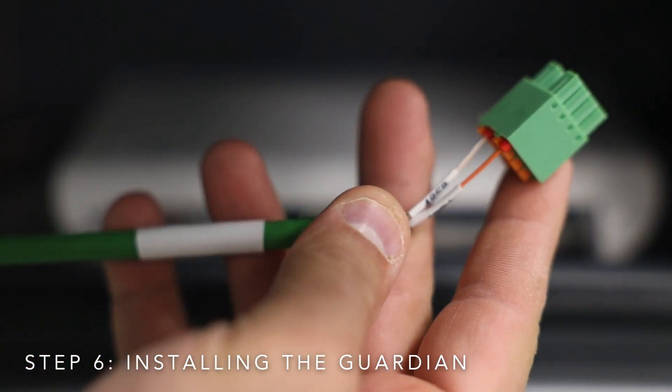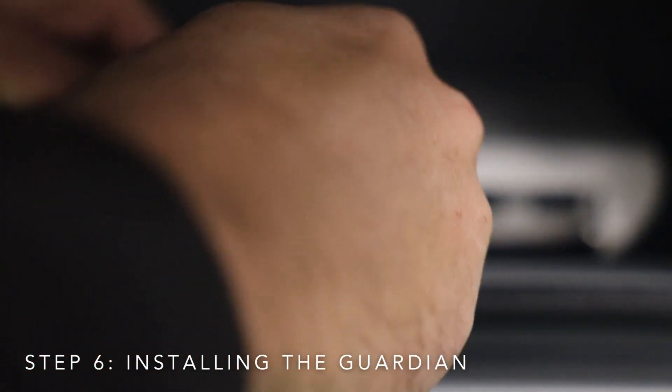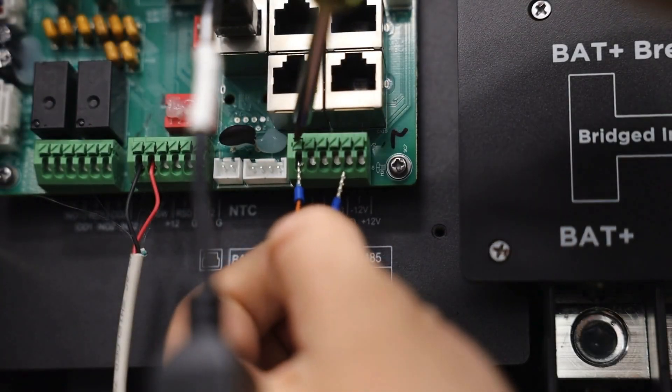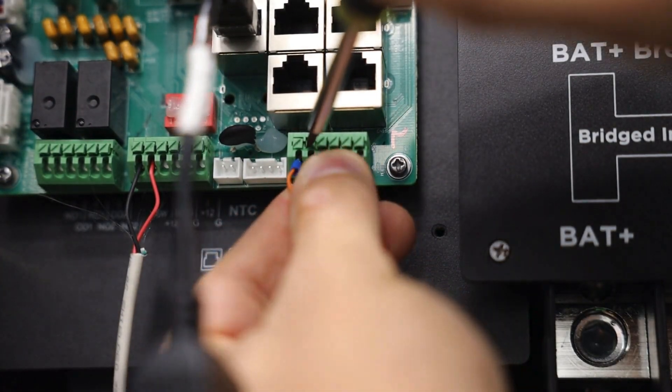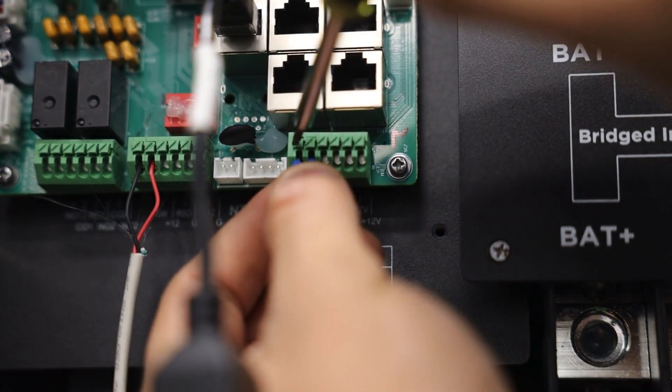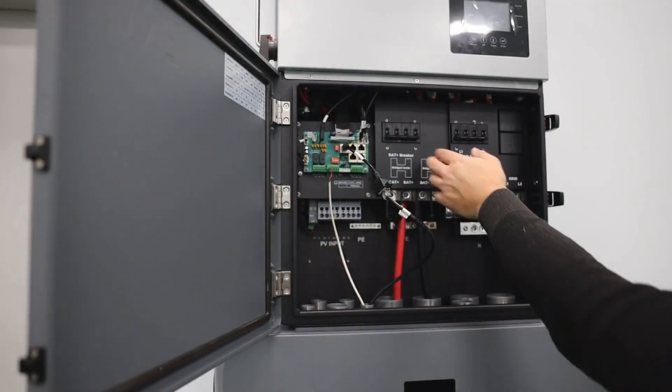Up next, installing the Guardian. First, make sure to connect the DC cable to the Guardian. Second, connect the battery Envy communication cable to the E-Way port. Third, connect the Guardian to Envy cable.